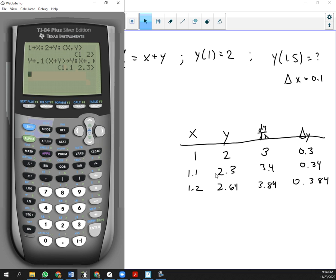And we get the 1.1, 2.3. And now, we don't have to do anything. Hit enter again. And it gives us the 1.2, 2.64. And you just keep on going until you get to the 1.5 that you wanted your approximation for. So, y of 1.5 is approximately 3.94204. Nifty, eh?